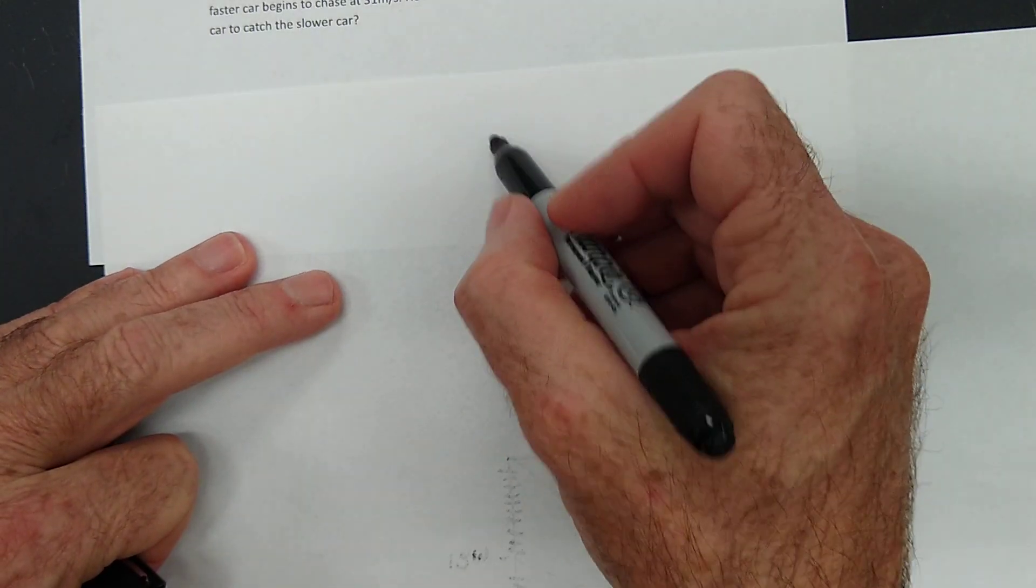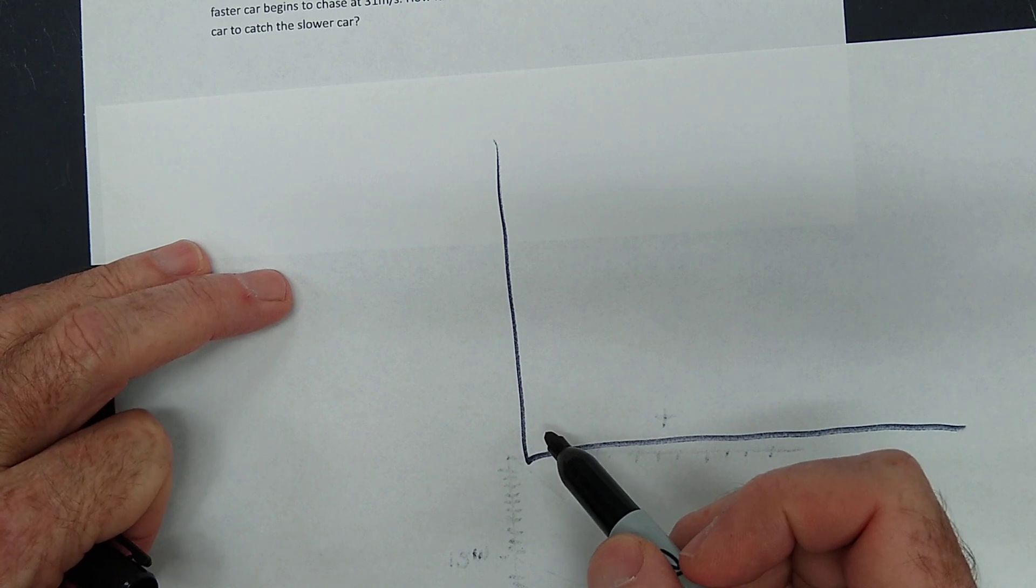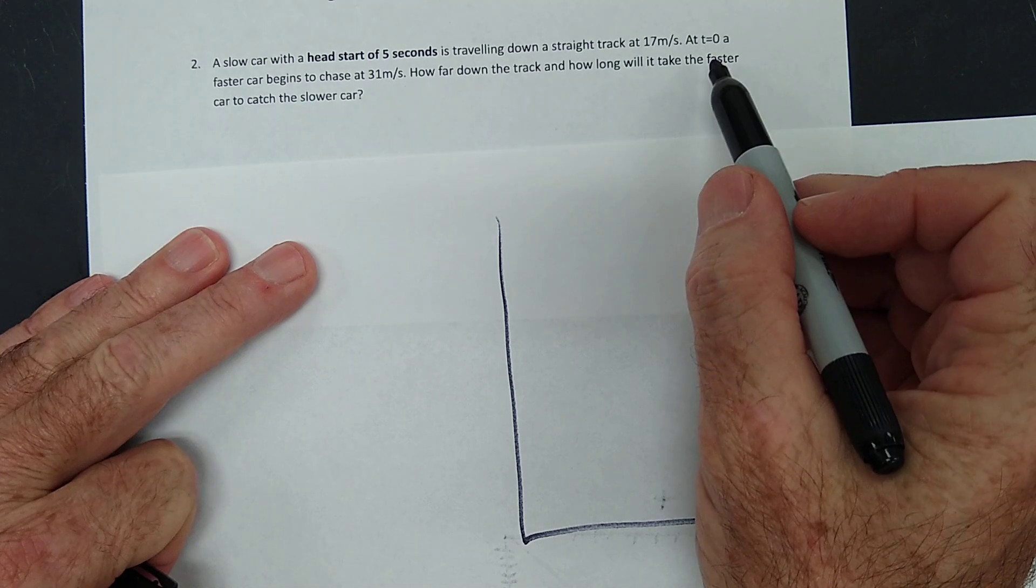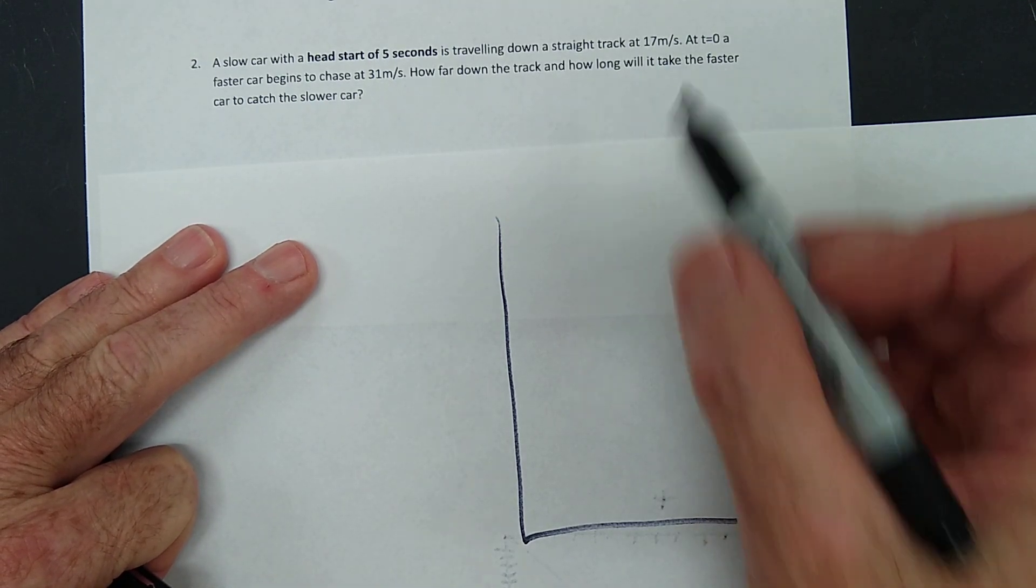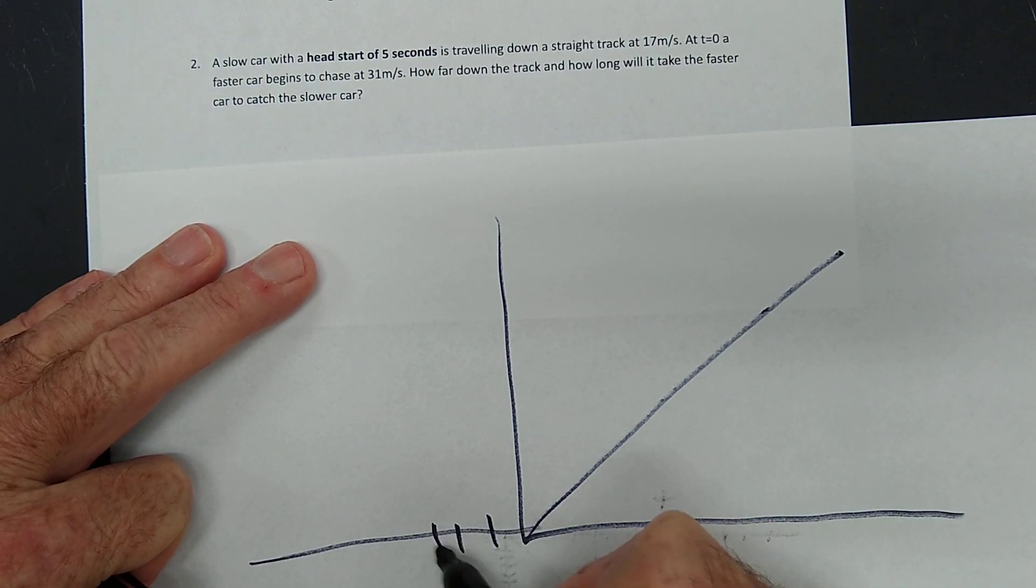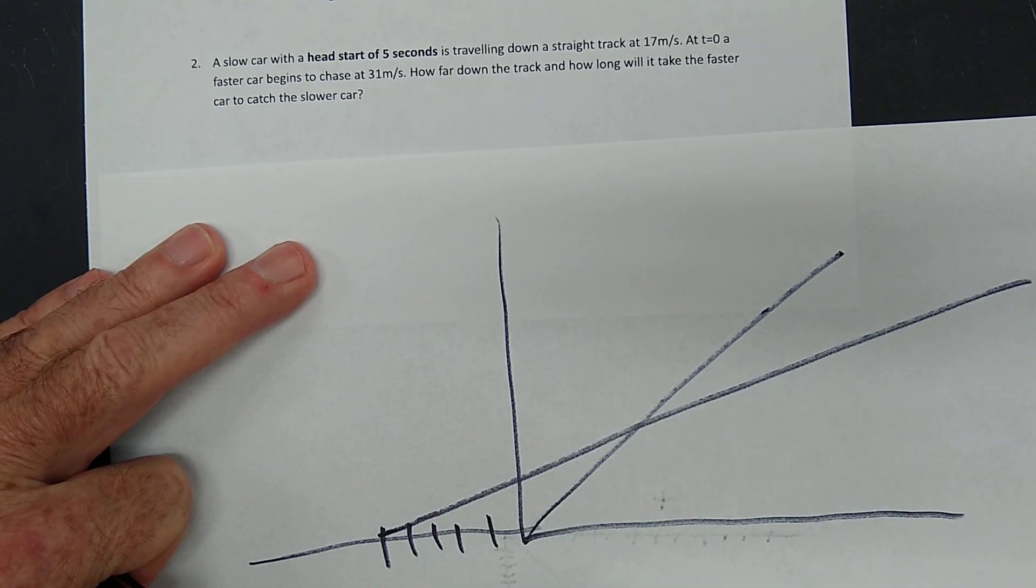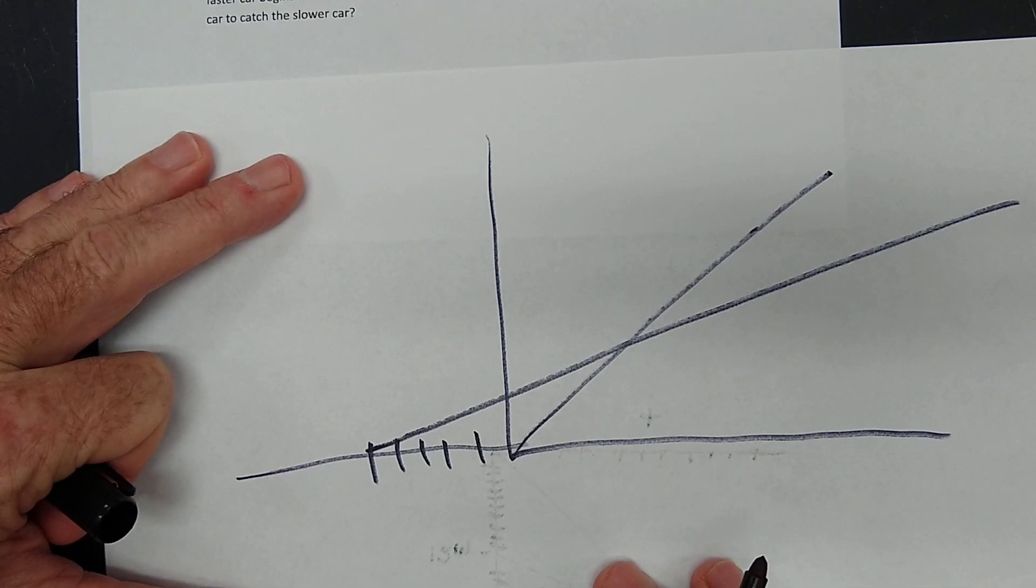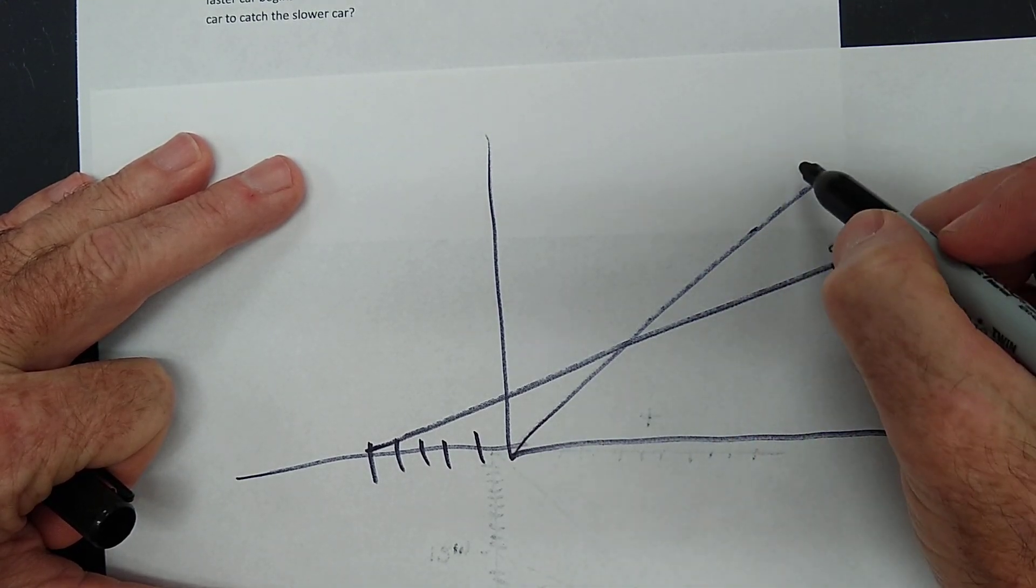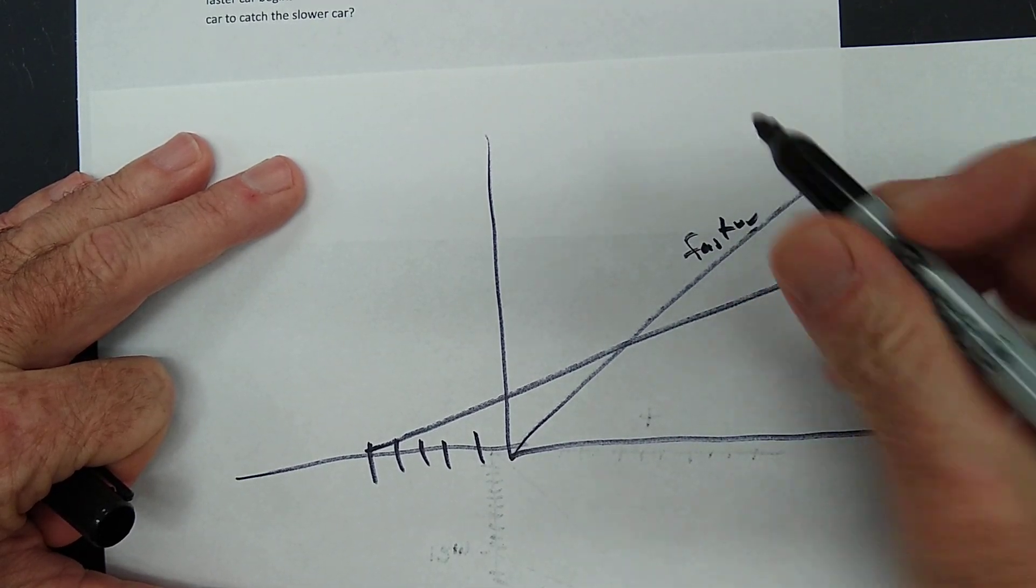What would this look like on a graph? Well, the other one has a head start of 5 seconds. And at T equals 0, the next car starts. So if we call that T equals 0, then the other car had to start back here 5 seconds earlier. Does that make sense? This is the slower car. And if we're going to say T equals 0, we've got to say the faster car started right here. And there's your graph.